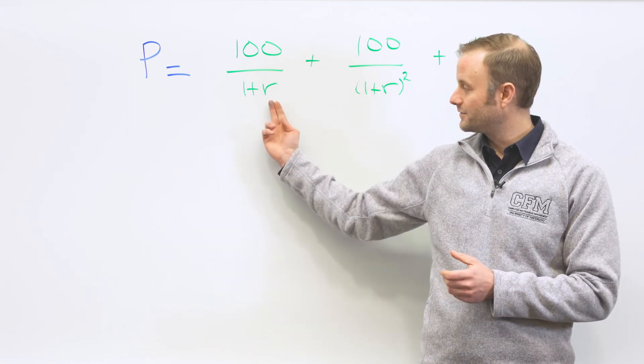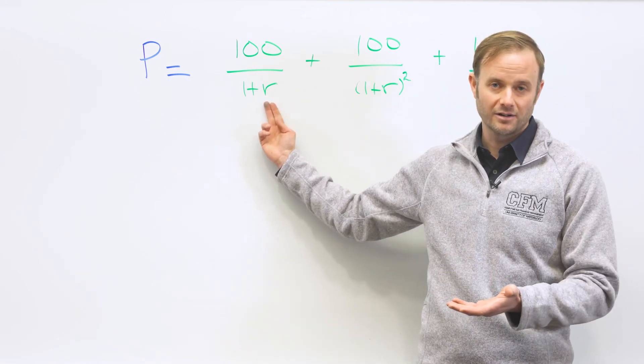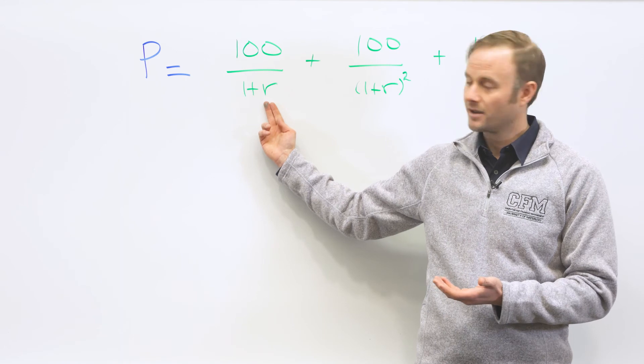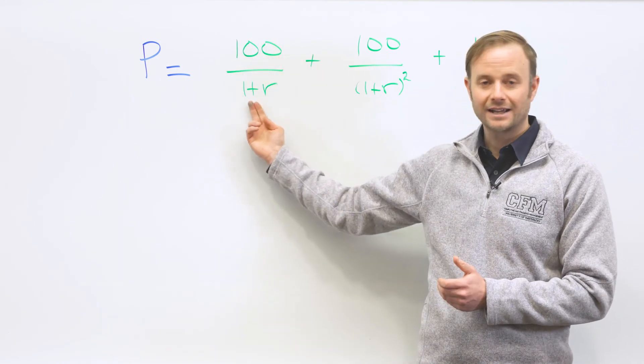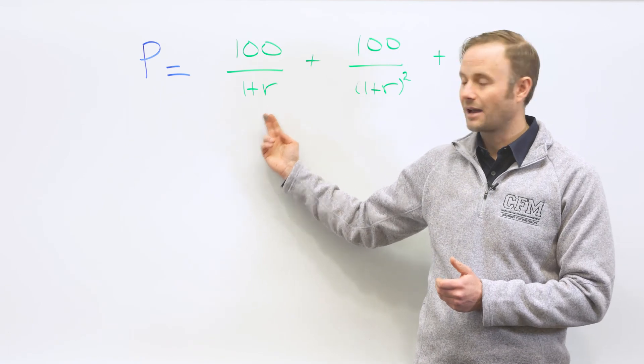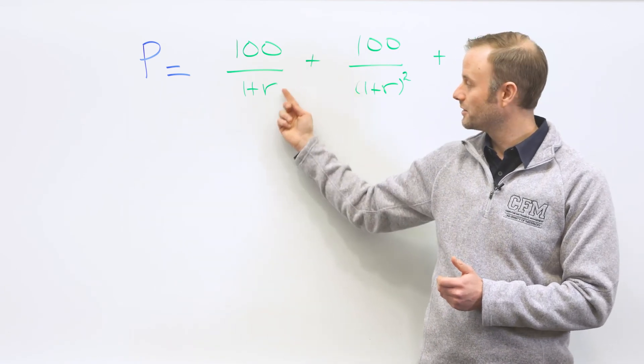Well, we're going to have to use a discount rate, R, which we saw earlier. The first $100 you get is going to look exactly like before. To bring that back to today, it's 100 over 1 plus R.